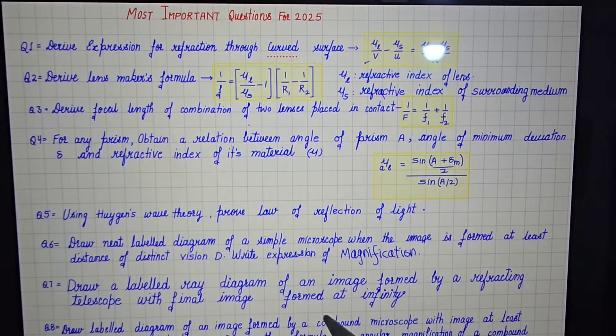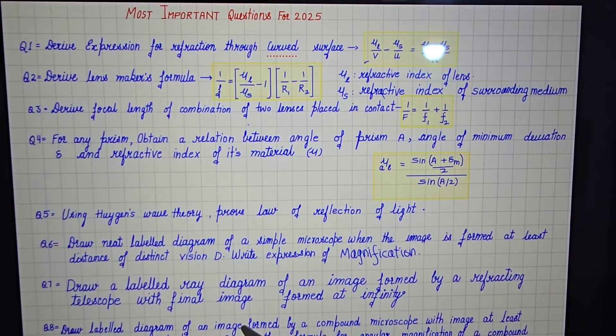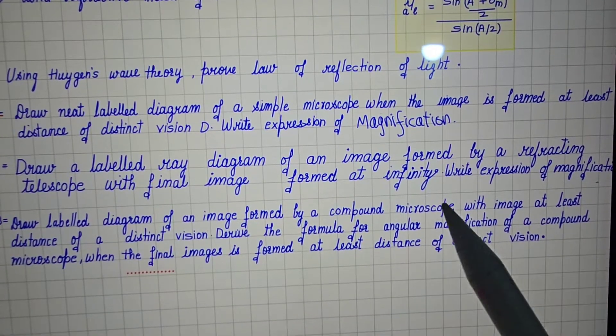Then ray diagram of image formation by refracting telescope when final image is formed at infinity, and expression of magnification.